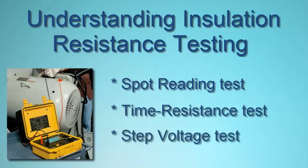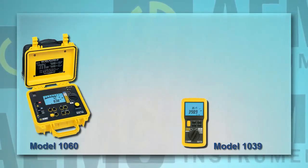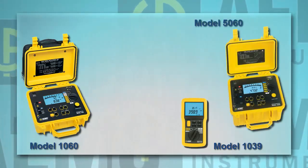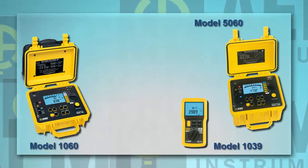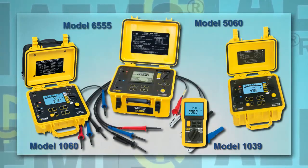These three tests are used primarily to test motor, generator, cable, and transformer insulation. To perform these tests, you will need a megameter with a timed test function. AEMC Instruments offers a complete line of megameters designed for insulation testing, ranging from 100-volt handheld instruments to heavy-duty models providing test voltages up to 15,000 volts.